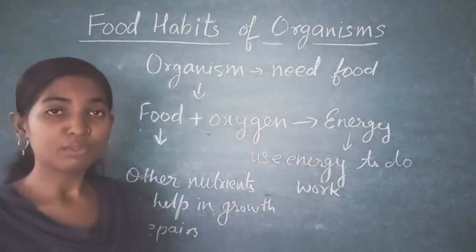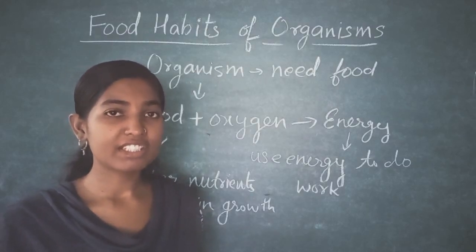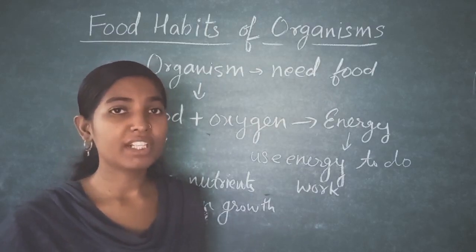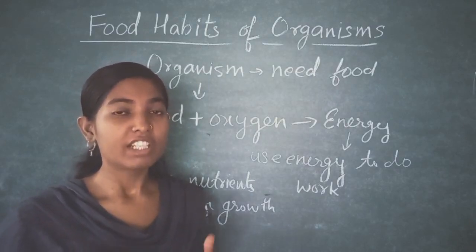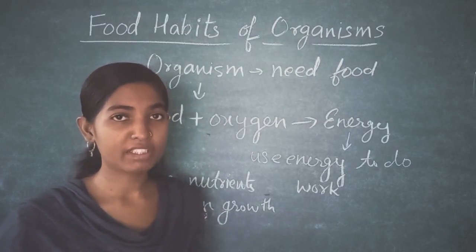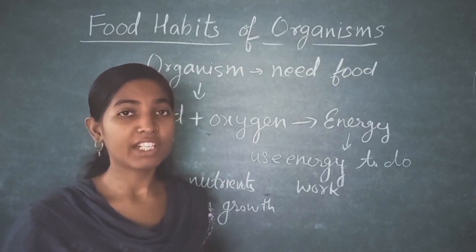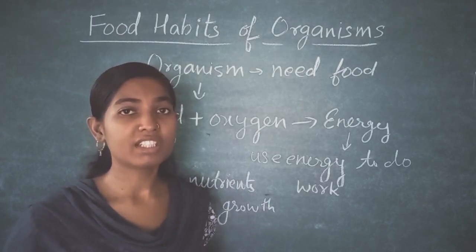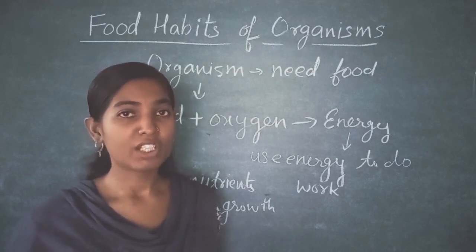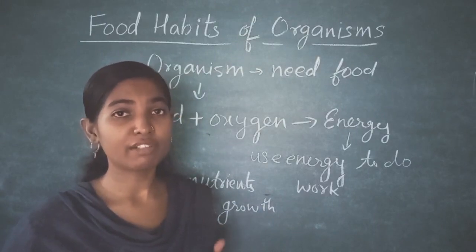To study all the organisms' food habits, scientists have divided all the organisms into different groups. They have divided organisms into groups on the basis of their food habits - what they are eating, how they are using the food, and how they are getting the food. On this basis, scientists have divided various organisms into different groups.